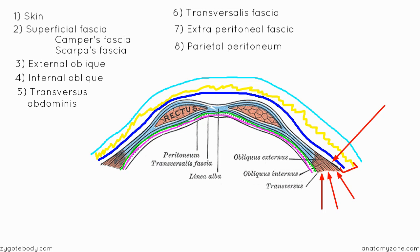The parietal peritoneum is the final layer that your needle will pass through. It lines the walls of the abdomen and is a thin serous membrane. The parietal peritoneum lines the walls, while the visceral peritoneum covers the viscera. Mesenteries are doublings of the peritoneum that wrap around organs and suspend them from the abdominal walls.